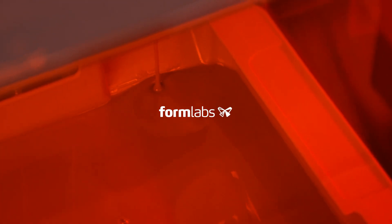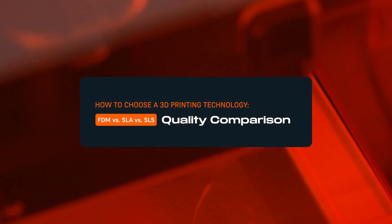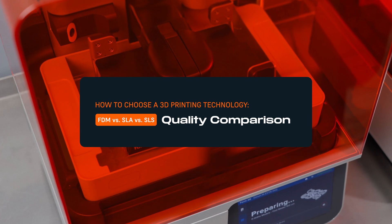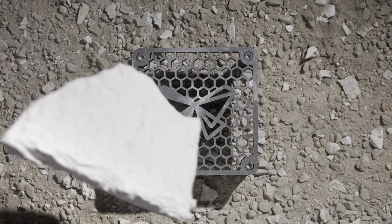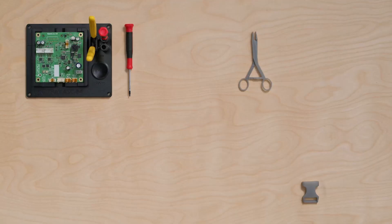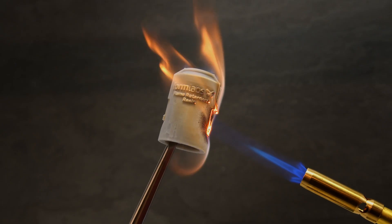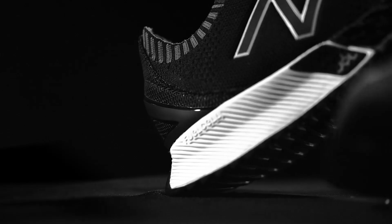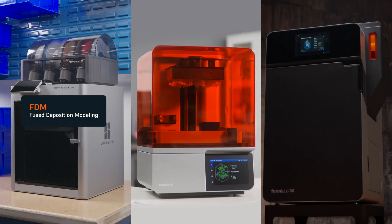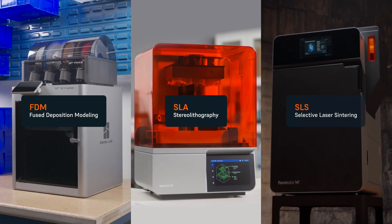Not all 3D printed parts are created equal. Different 3D printing technologies can create parts with vastly different qualities and mechanical properties, which makes them suitable for different applications. In this video, we'll compare the quality of the most common plastic 3D printing technologies: FDM, SLA, and SLS.